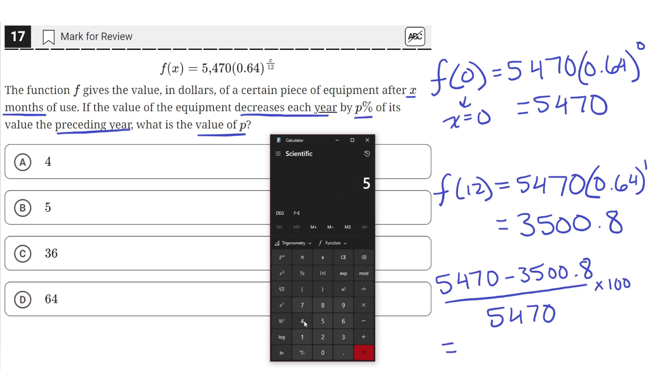So 5,470 minus 3,500.8. We'll get this, and we need to divide that by 5,470. And then multiply by 100 to get a percentage.